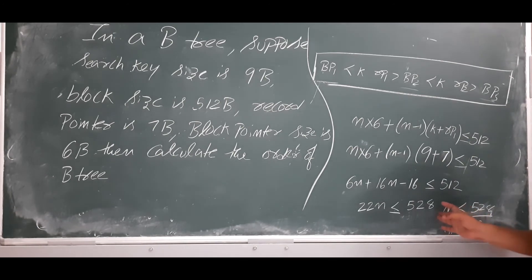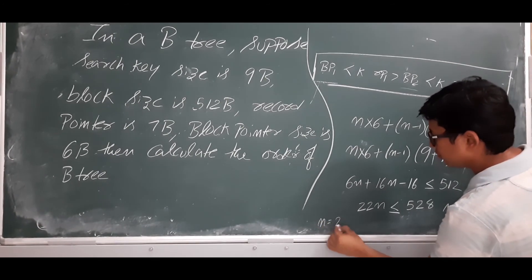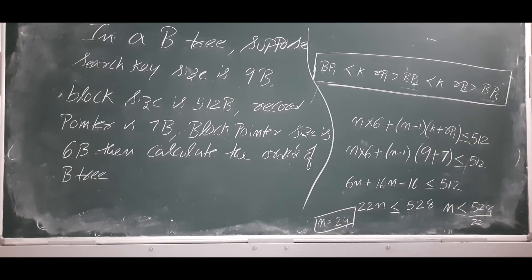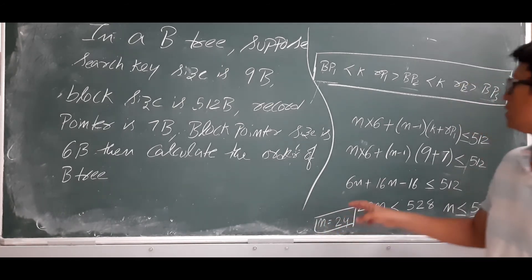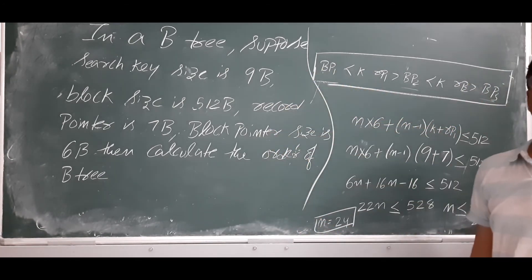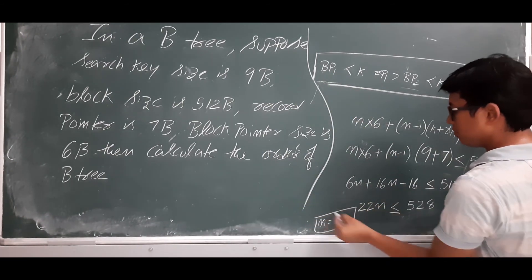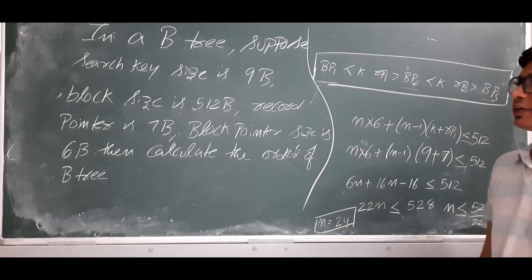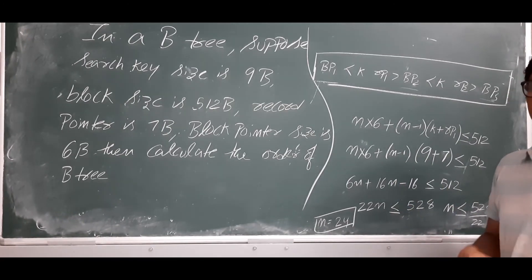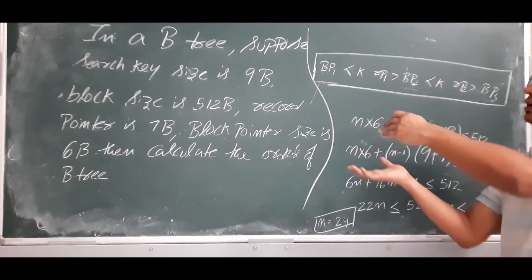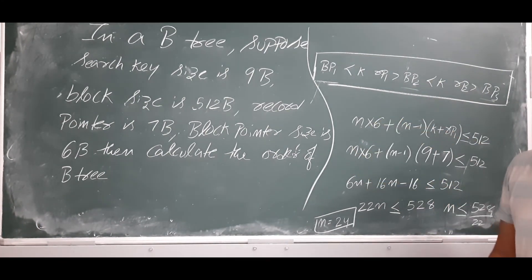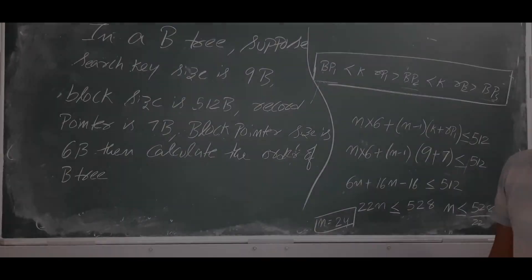So n is less than or equal to 528 divided by 22, which gives approximately 24. The n value is 24, which is the order of the B-tree. So the order of the B-tree for this example is 24. I hope you understood with this example. I will take another similar question for your better understanding. Thank you so much.